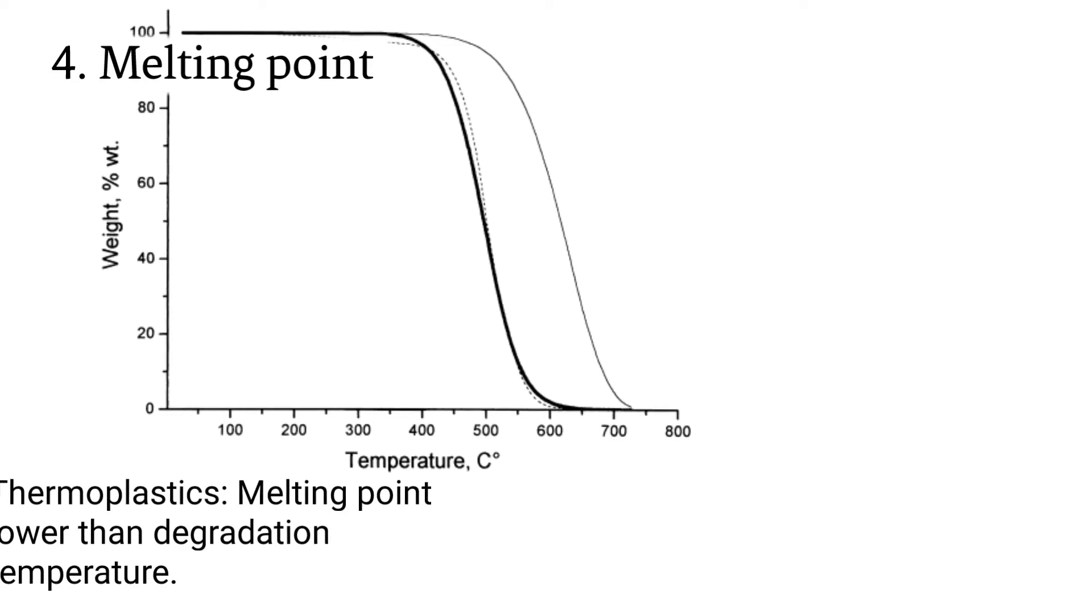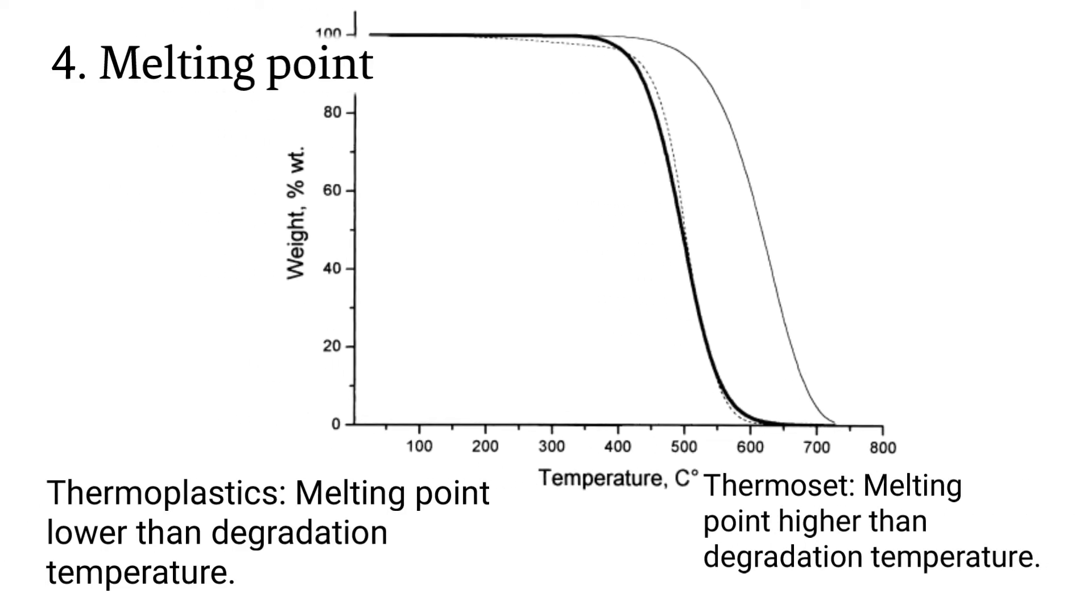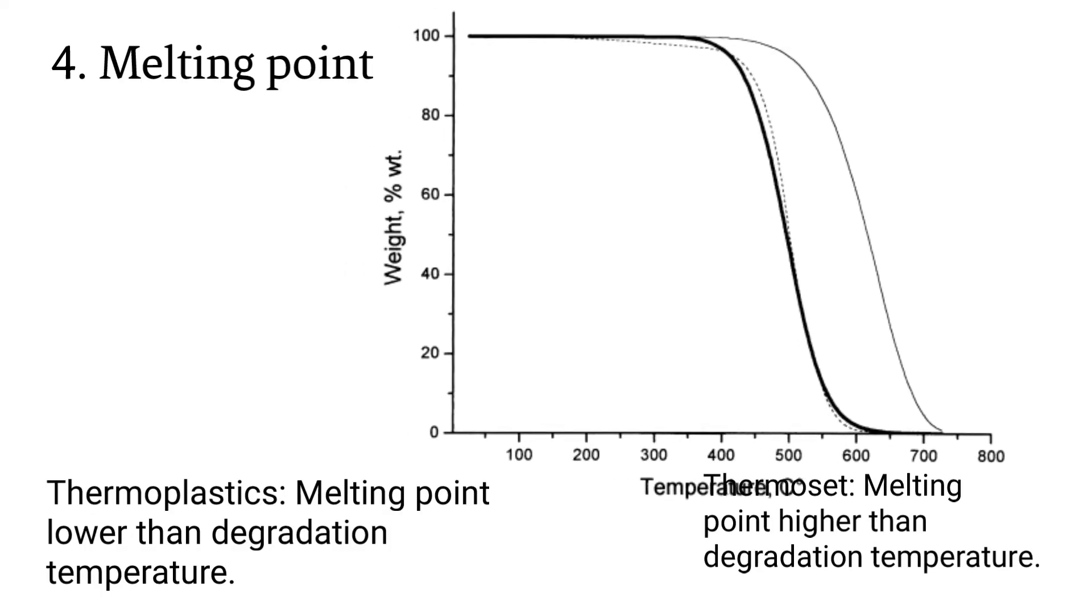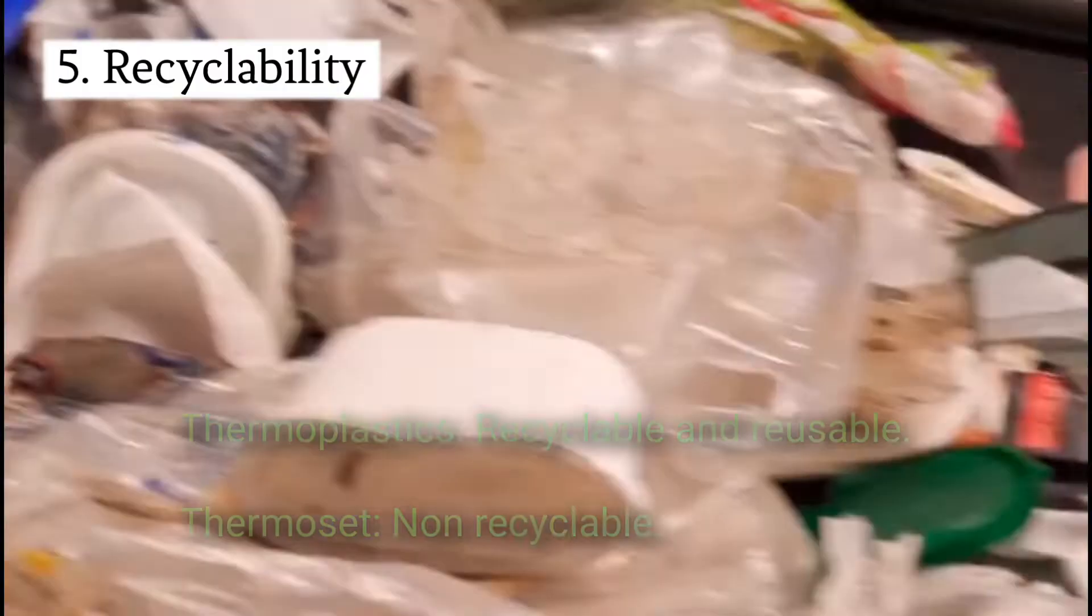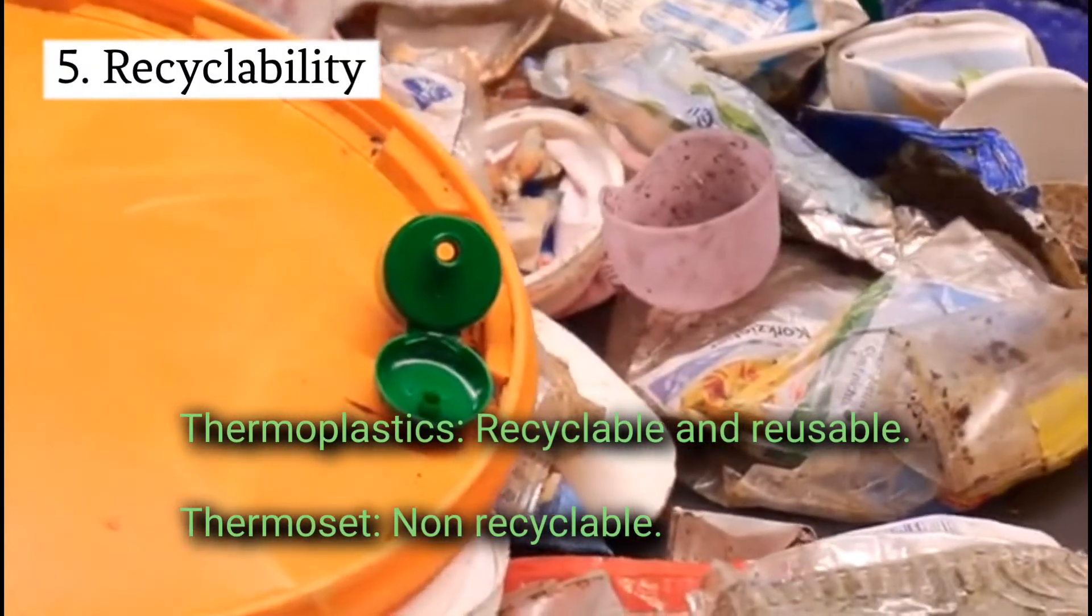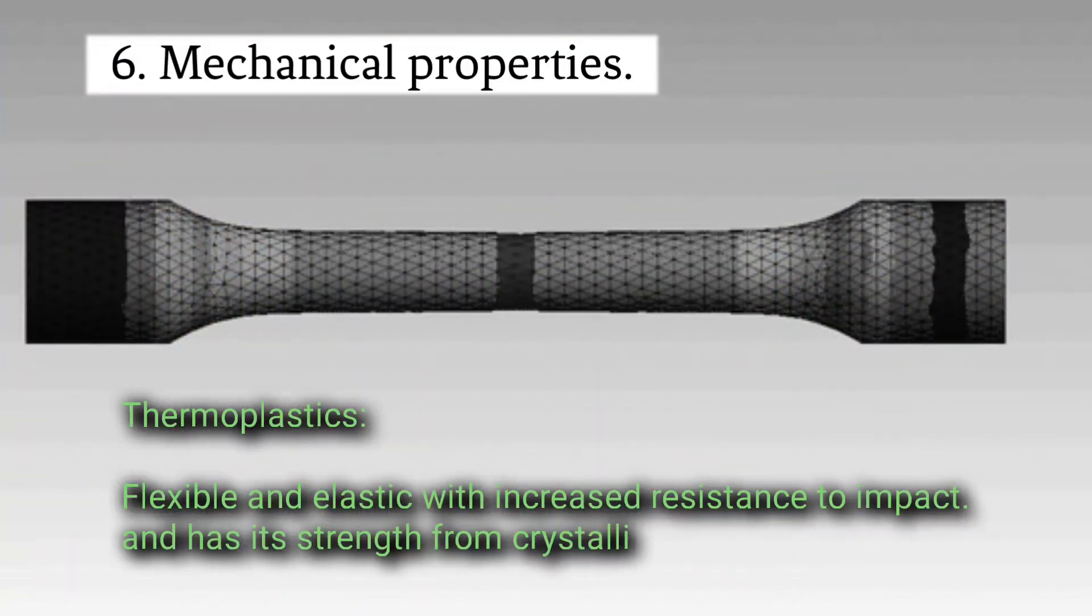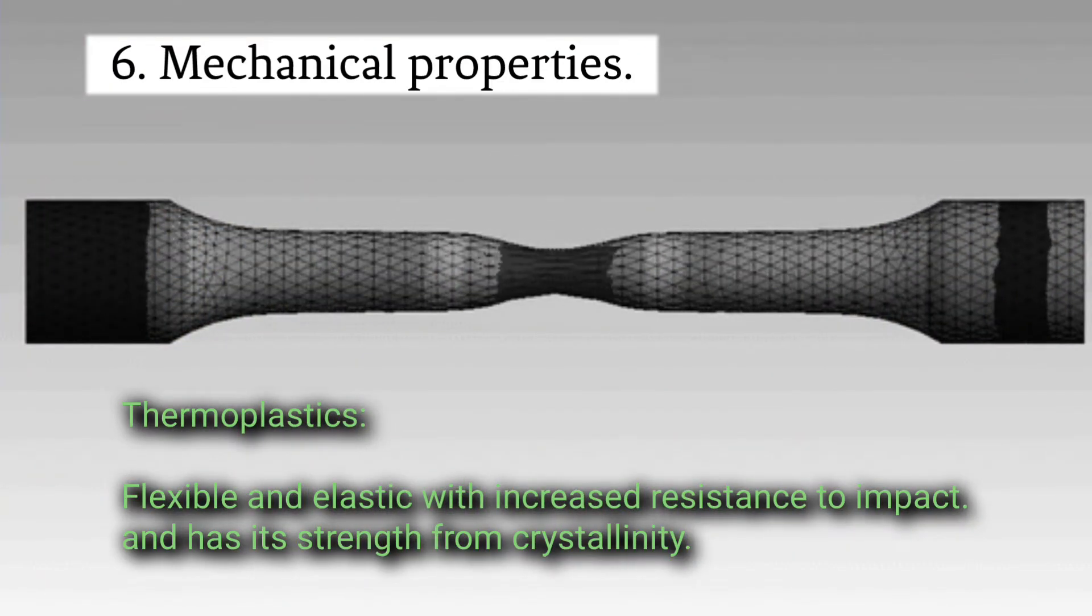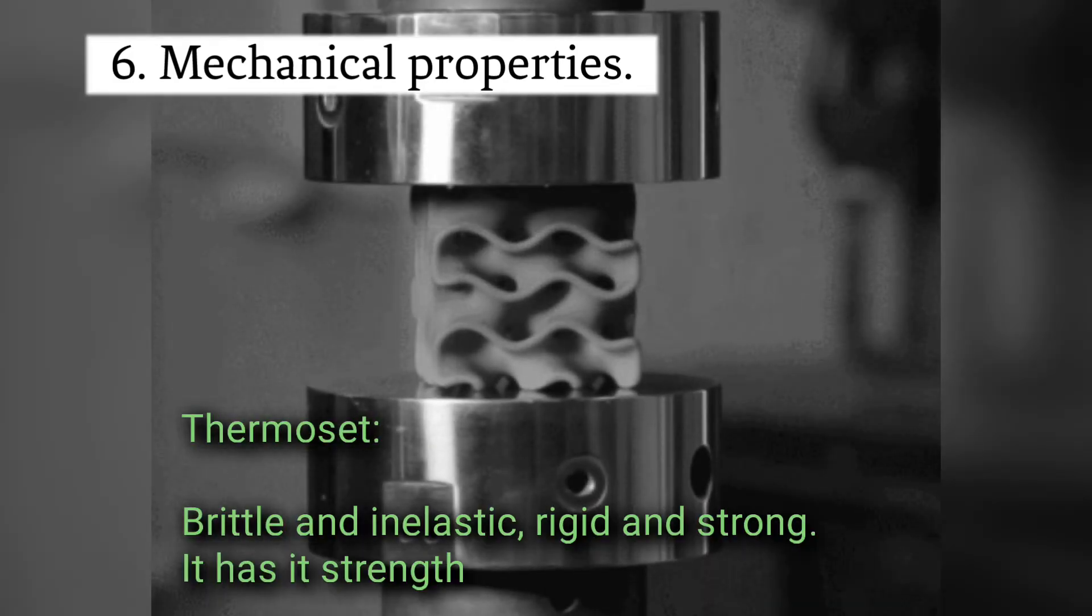Melting point: Thermoplastic melting point lower than degradation temperature. Thermoset melting point higher than degradation temperature. Recyclability: Thermoplastic recyclable and reusable. Thermoset non-recyclable. Mechanical properties: Thermoplastic flexible and elastic with increased resistance to impact and has its strength from crystallinity. Thermoset brittle and inelastic, rigid and strong, it has its strength from cross-linking.